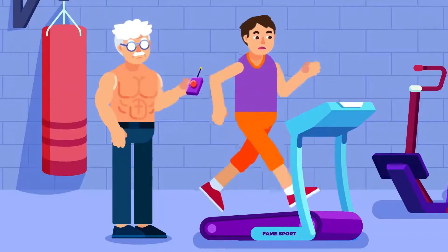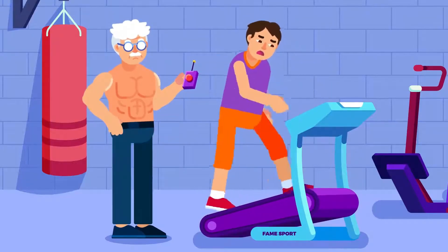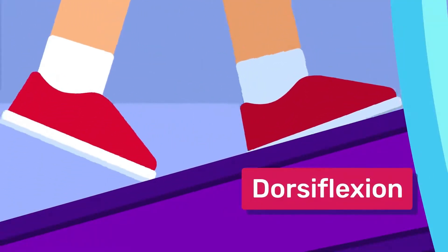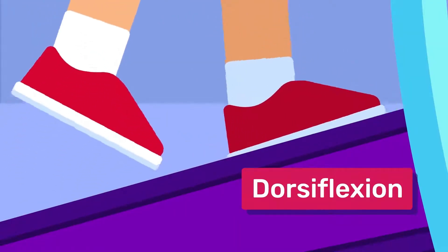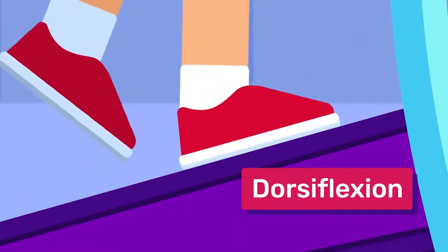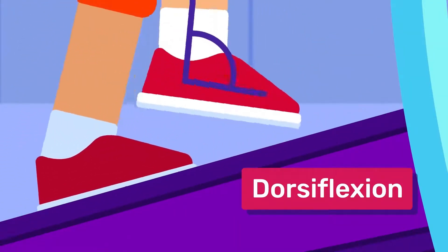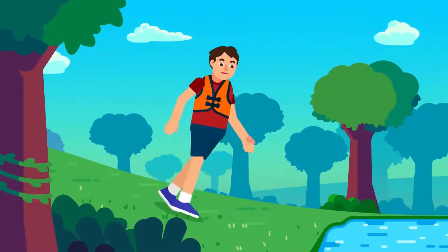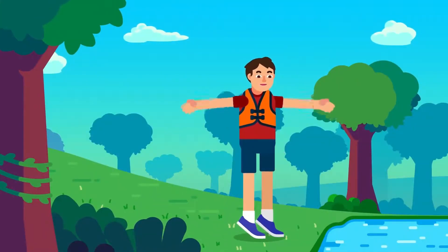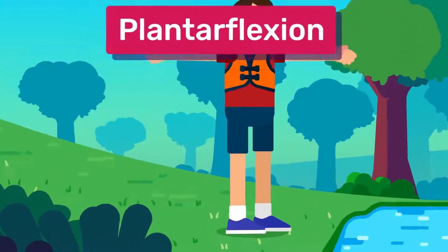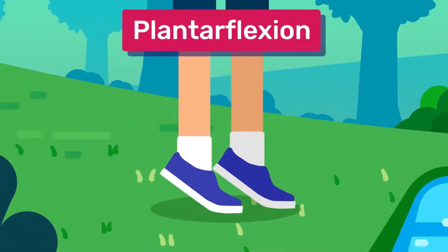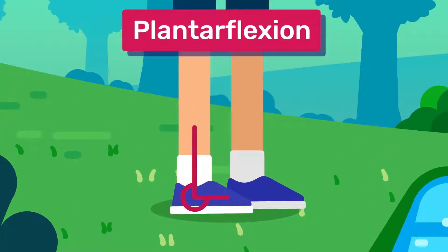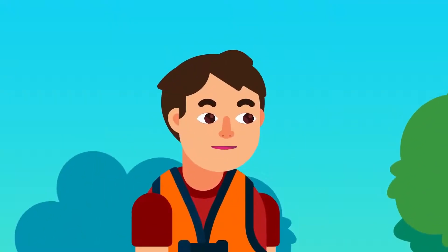Our feet are capable of moving in two types of flexion movement. The first is called dorsiflexion, and it occurs when we walk uphill, so the front of the foot is lifted, where the angle between the dorsal or upper feet and the shin is decreased. The second occurs as we tread downhill or stand on our toes, and it's called plantarflexion, where the angle between the plantar or sole of our feet and the shin decreases.